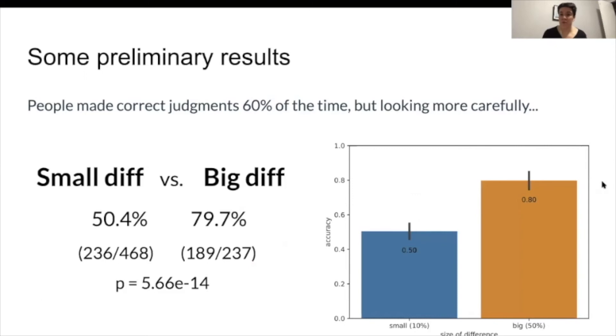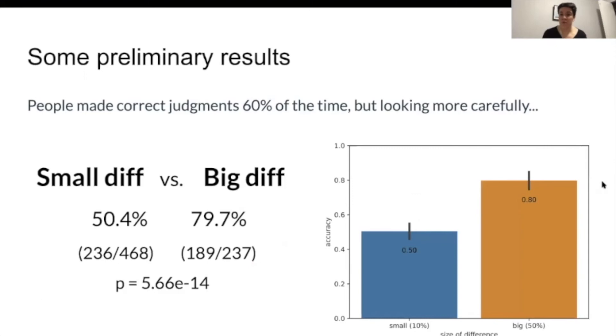And so some preliminary results here are that we do see, encouragingly, that people make correct judgments about 60% of the time, which was above random chance for us. So that would have been 50%. But looking more carefully, pretty much all of that being above random chance is contributed by generation pairs where there was a large difference.